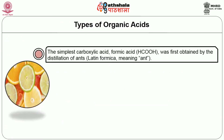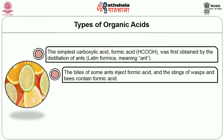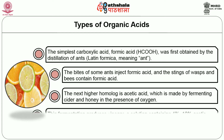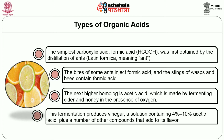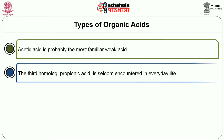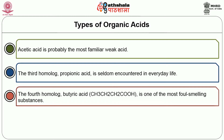Now let us discuss the different types of organic acids. The simplest carboxylic acid, called formic acid (HCOOH), was first obtained by the distillation of ants. The bites of some ants inject formic acid, and the stings of wasps and bees also contain formic acid. The next higher homologue is acetic acid, which is made by fermenting cider and honey in the presence of oxygen. This fermentation produces vinegar, a solution containing 4 to 10% acetic acid plus a number of other compounds that add to its flavor. Acetic acid is probably the most familiar weak acid. The third homologue is propionic acid, and the fourth homologue, butyric acid, is one of the most foul-smelling substances.